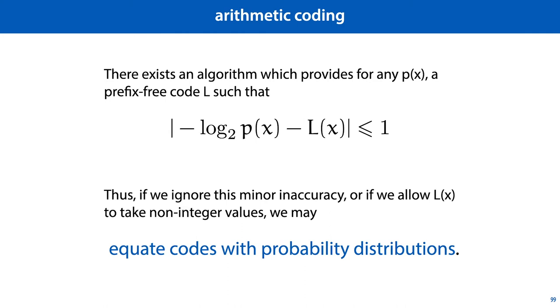Therefore, if we ignore this minor discrepancy, or if we allow the code length function L to take non-integer values, we may equate codes with probability distributions. For every probability distribution we encounter, there is a prefix-free code, and for every prefix-free code we can think of, we can turn it into a probability distribution.